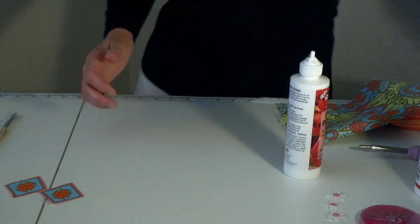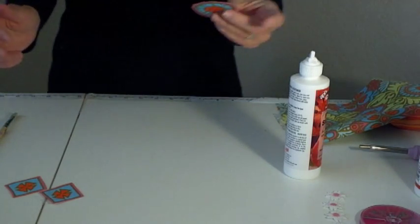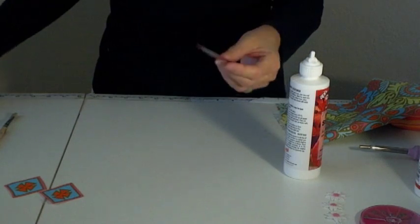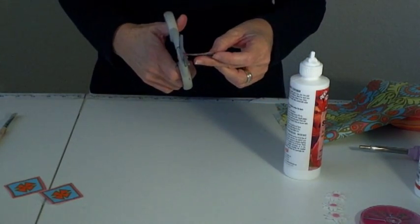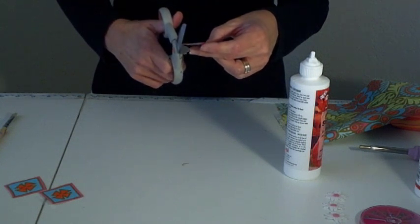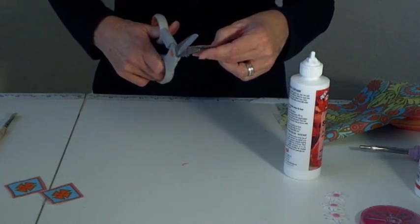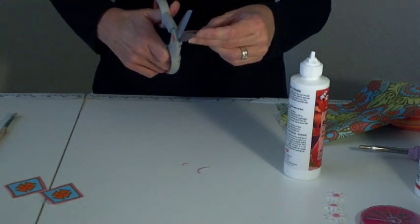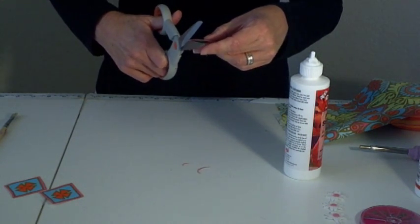And then when you're done what you'll have is you'll have your stiffened piece of fabric. So what you want to do next is you want to trim off, there's going to be some kind of rough edges. So just go around and trim it up, just barely taking off any, you just want to get those little rough edges.